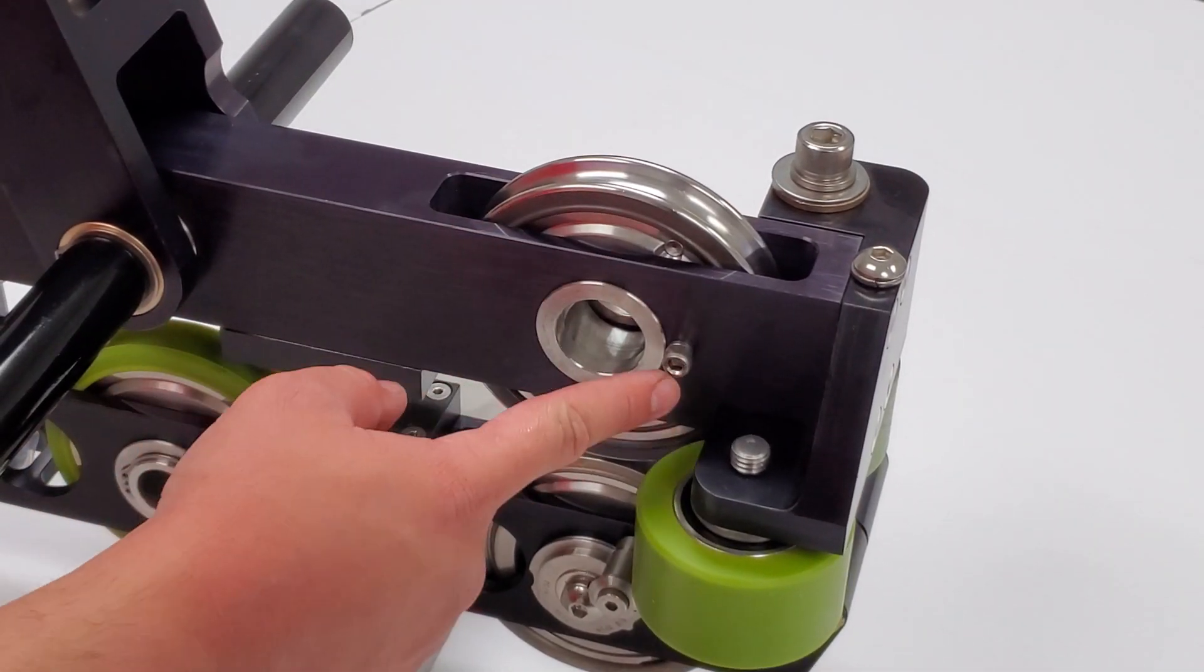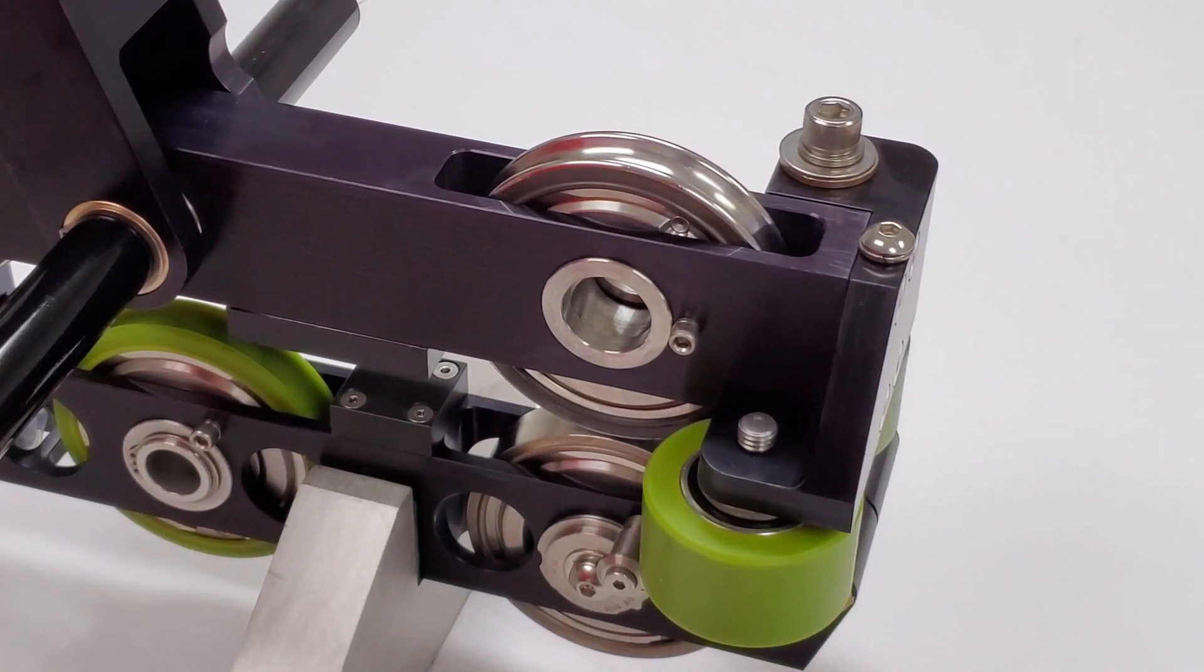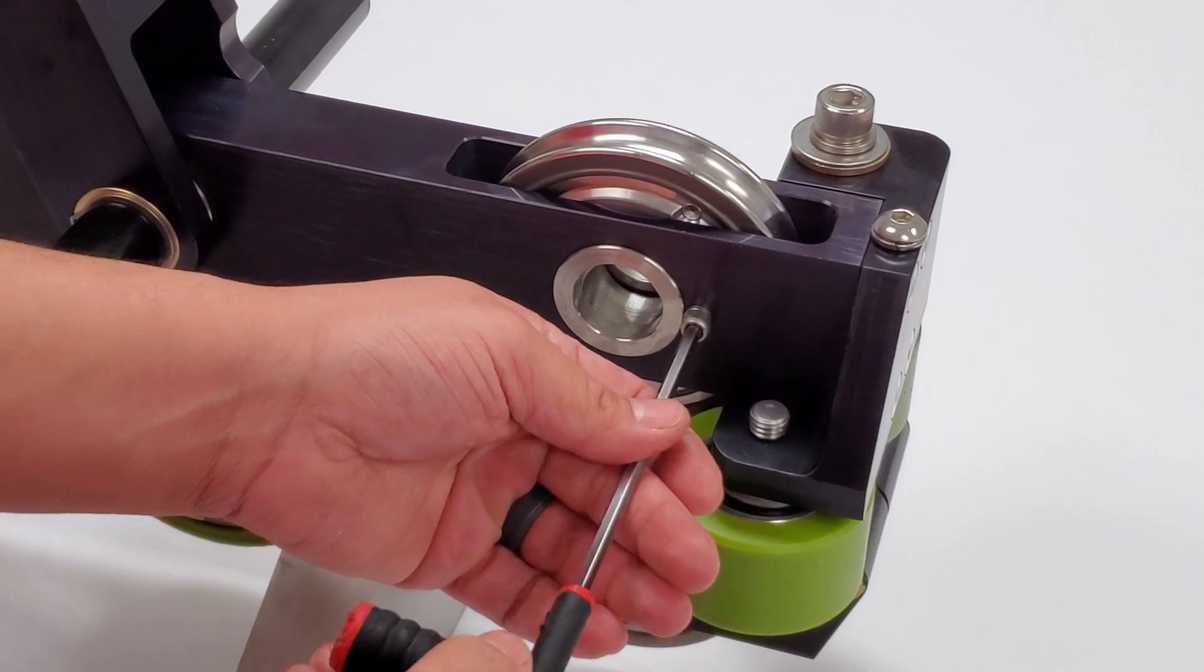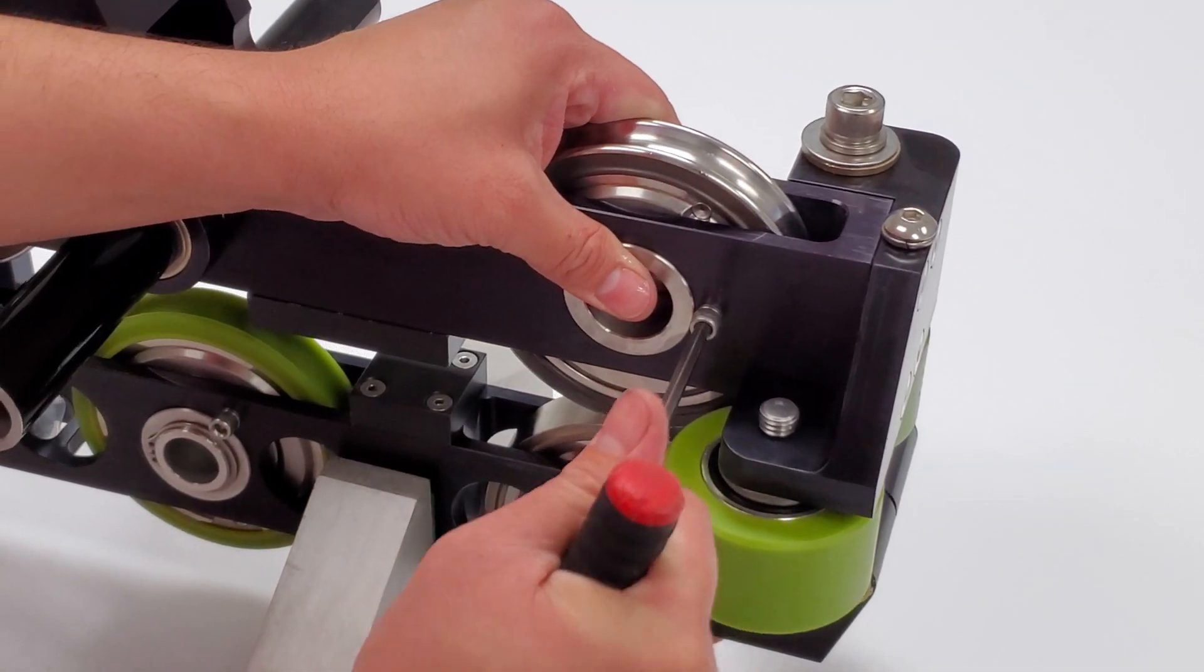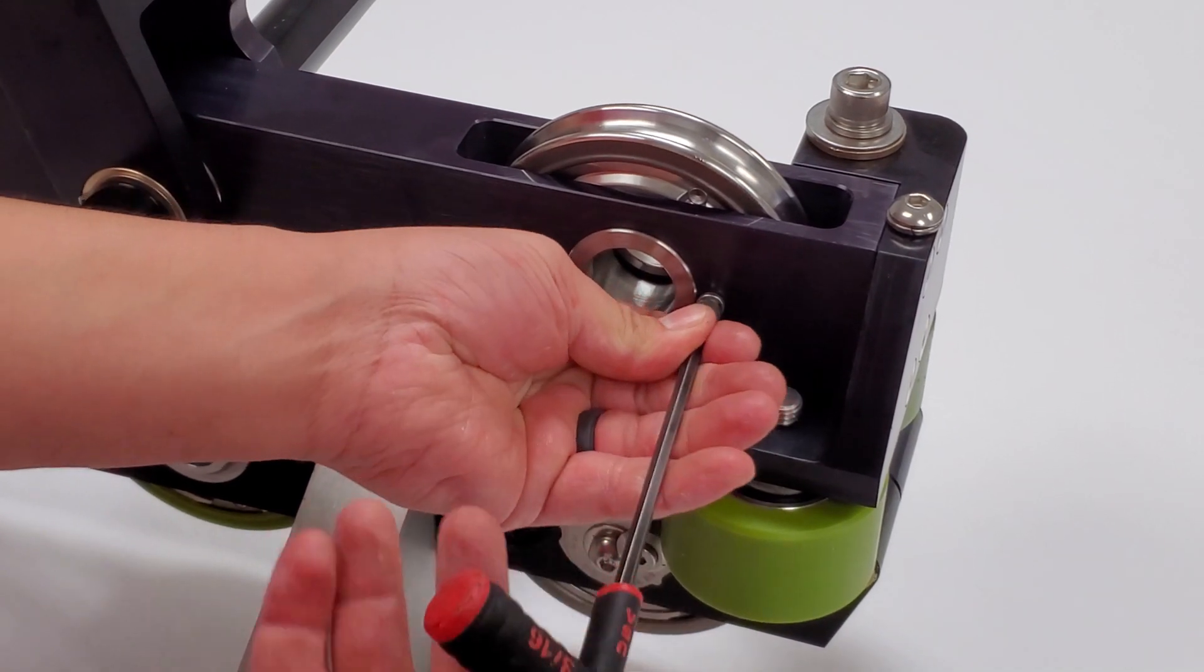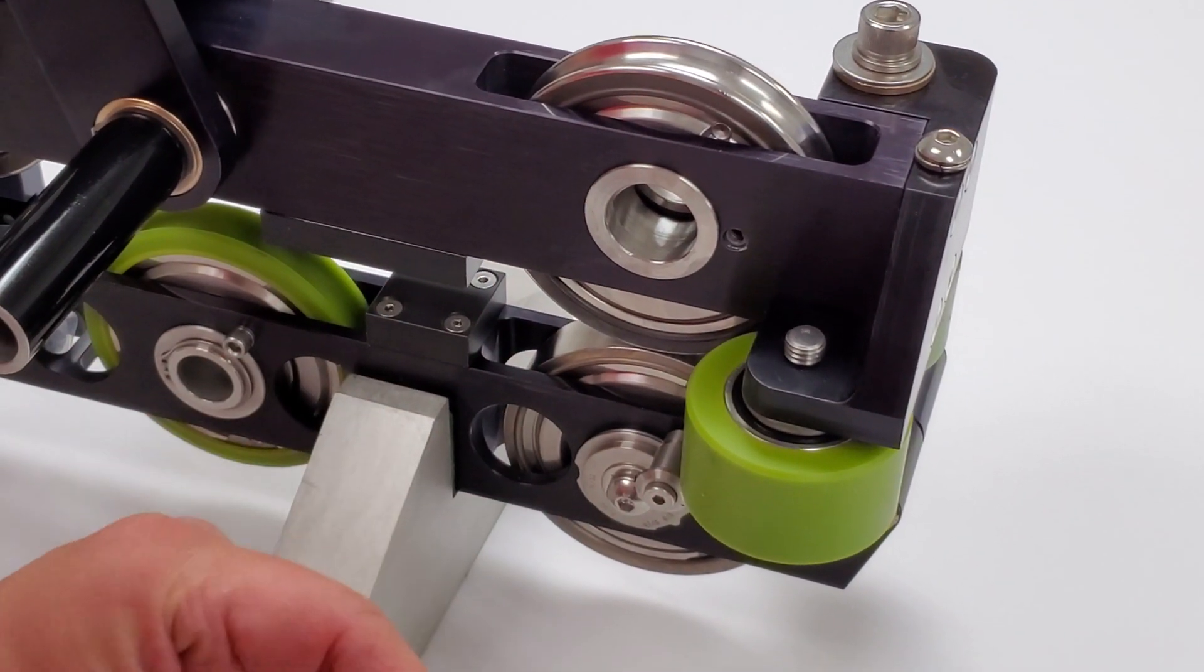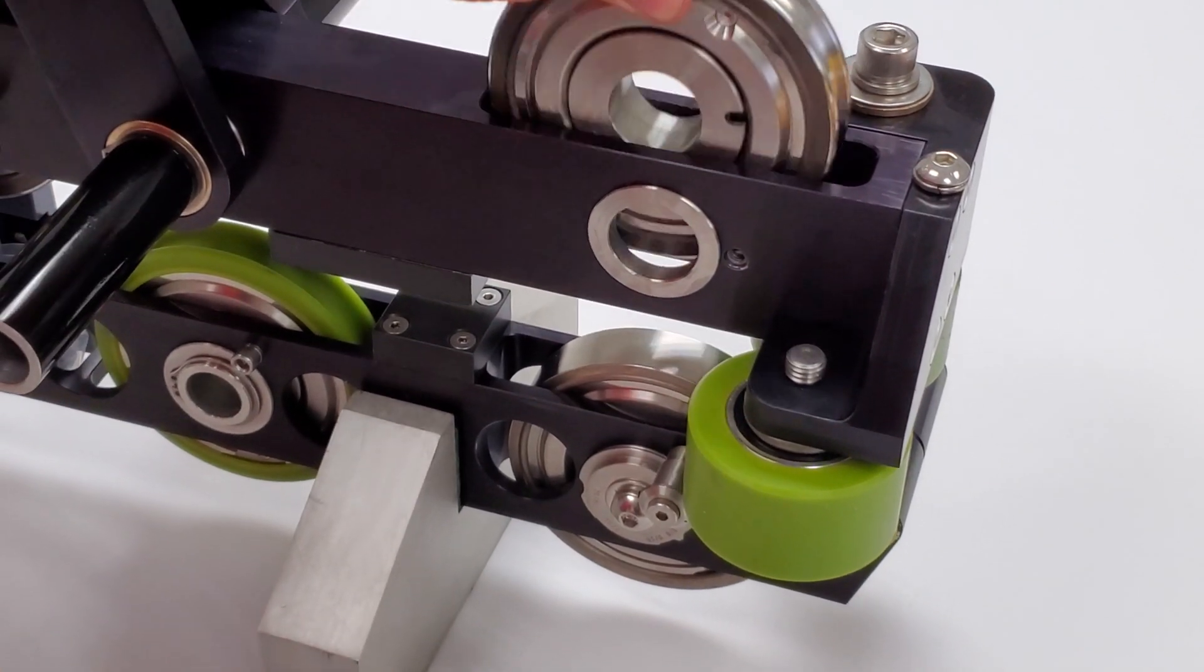In order to remove the wheel, first remove the anti-rotation screw. Now remove the guide wheel.